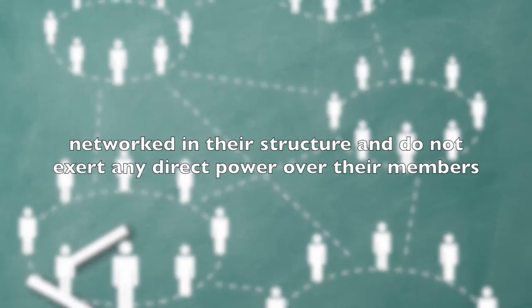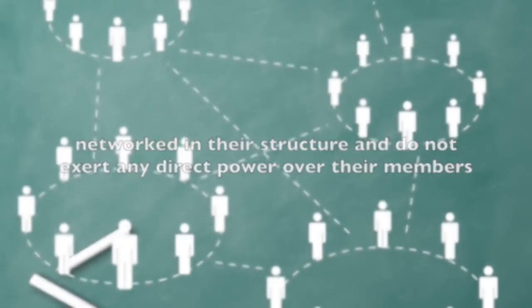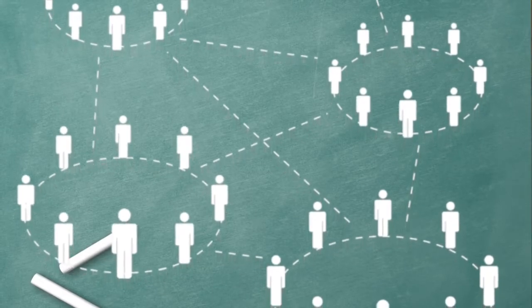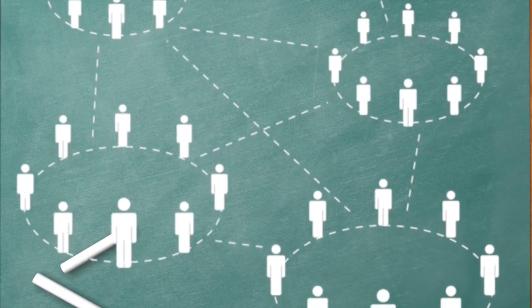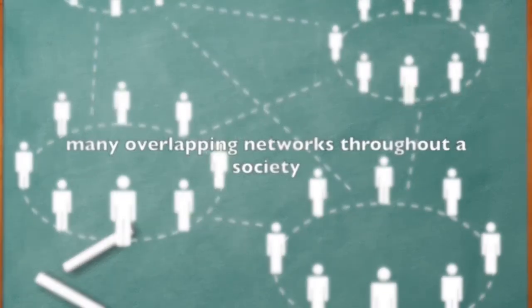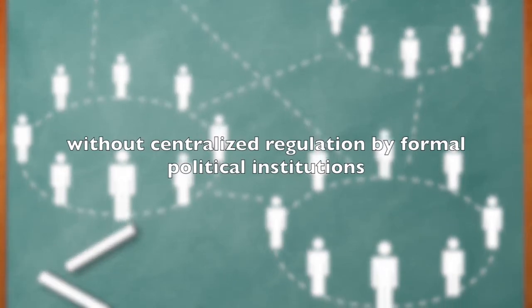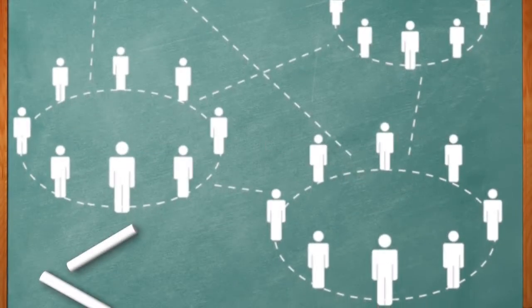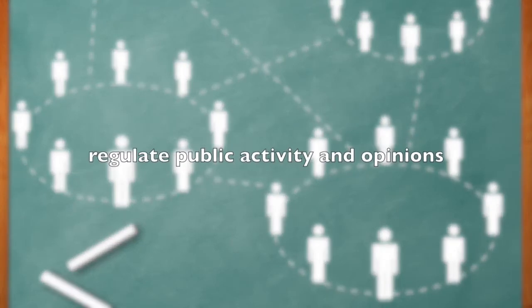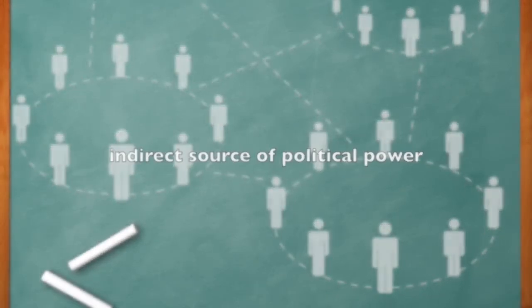Many of these are networked in their structure and do not exert any direct power over their members, often being voluntary associations. The nonlinear dimension to a political system is then the many overlapping networks throughout a society without centralized regulation by formal political institutions, but still they work to regulate public activity and opinions and are an indirect source of political power.